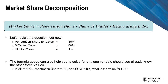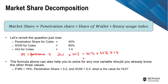Let's revisit the example. For Coles, the penetration share is 40%, the share of wallet is 60%, and the HUI is 1.4. From the formula, market share equals penetration share times SOW times HUI, which is 40% times 60% times 1.4.